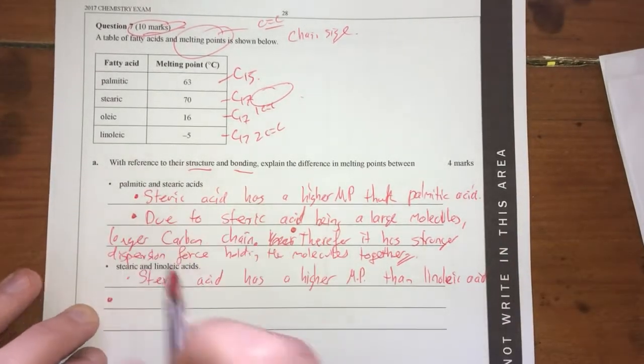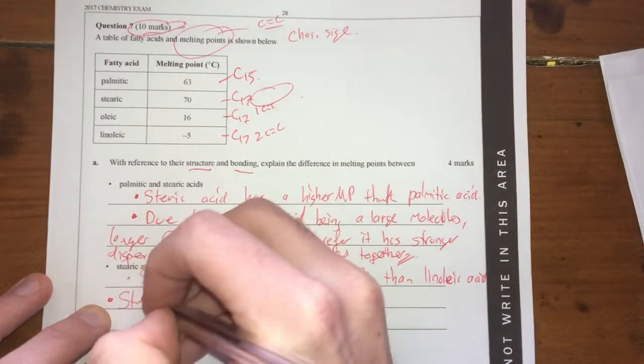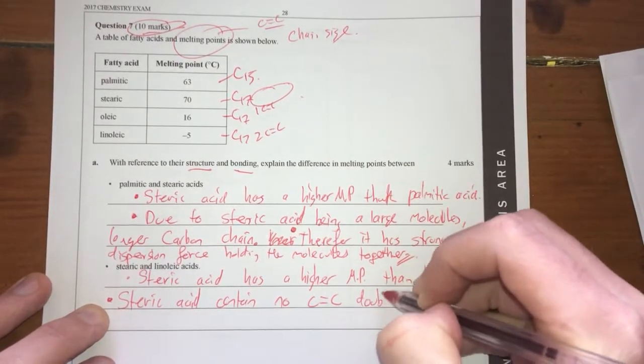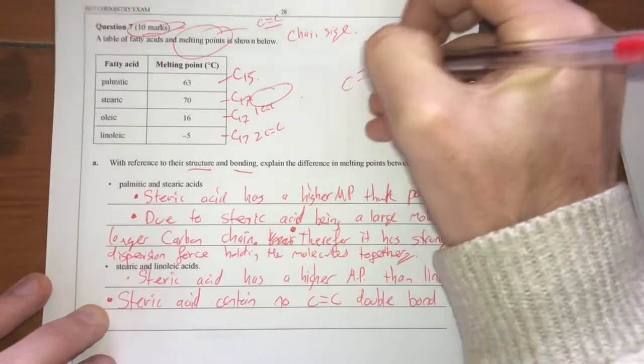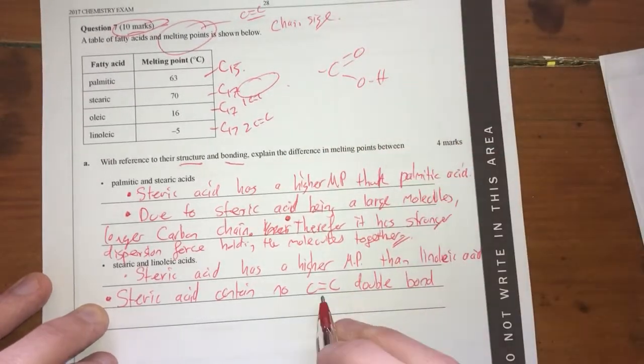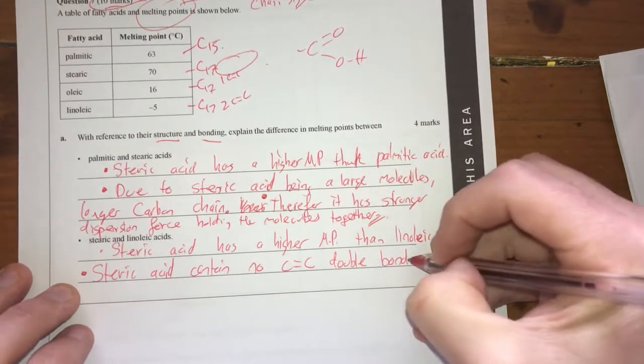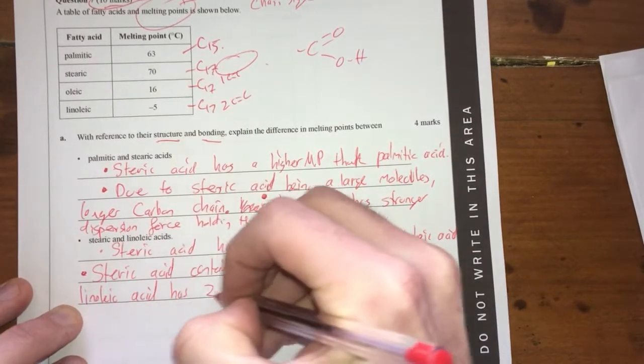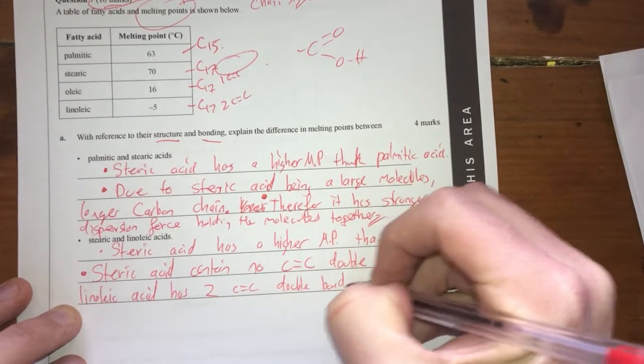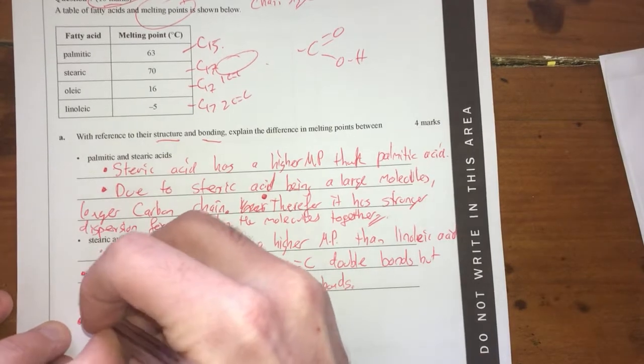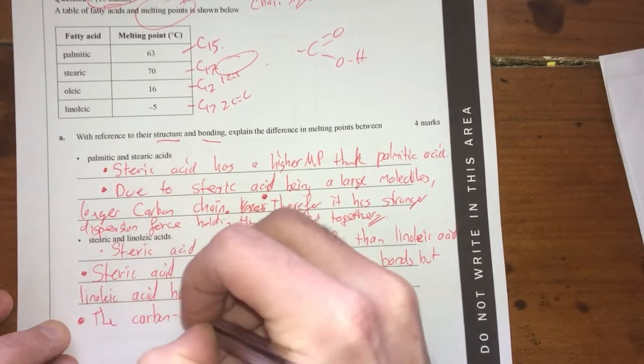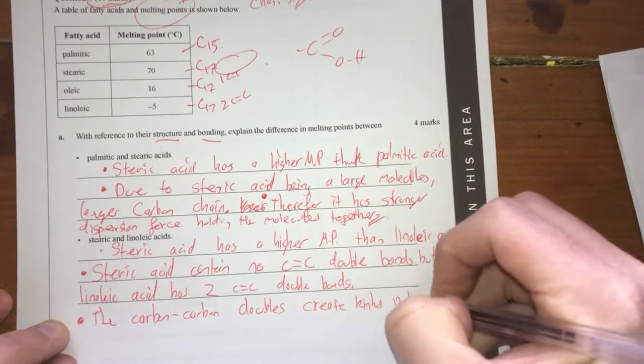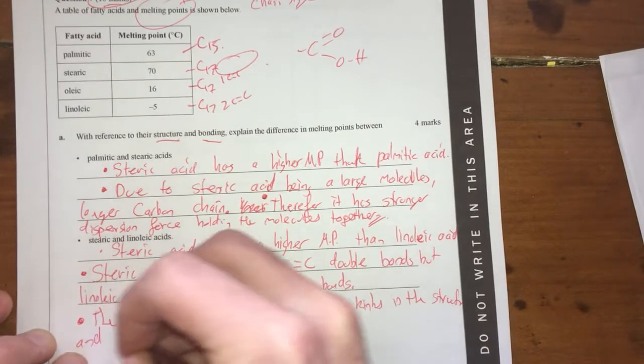And here, I'll explain with the structure. Stearic acid contains no carbon-to-carbon double bonds. Important that you don't just say double bonds here, because there are double bonds in the acid region. So I'll talk about carbon-to-carbon double bonds only in this area. But, linoleic acid has two carbon-to-carbon double bonds. I'm running out of room here, but I need to also talk about one thing that that does.